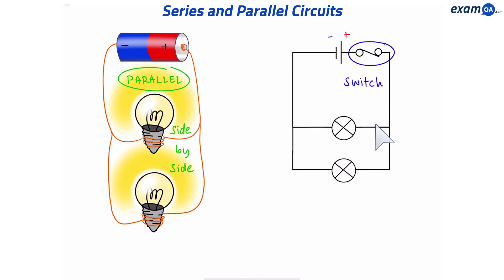Here we have a switch again. This time the switch is closed. Because it's closed, that means the current is flowing through the whole circuit and both of the bulbs are on. If I open the switch, both of them turn off because the current cannot flow anywhere.